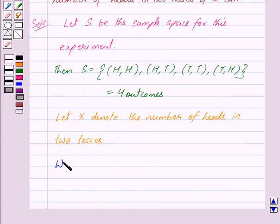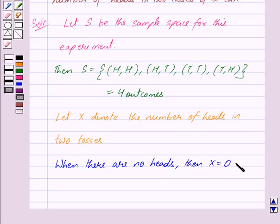When there are no heads, then X equals zero and probability of X equals one upon four.